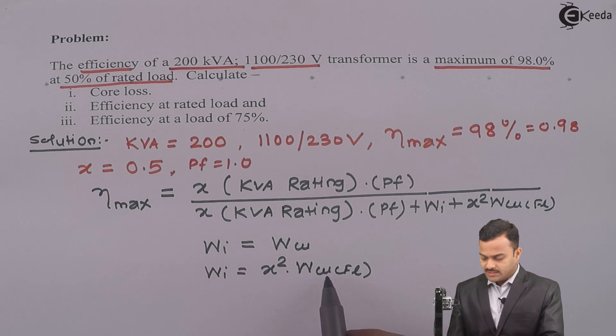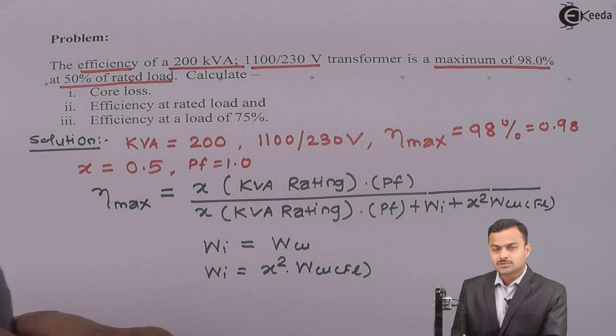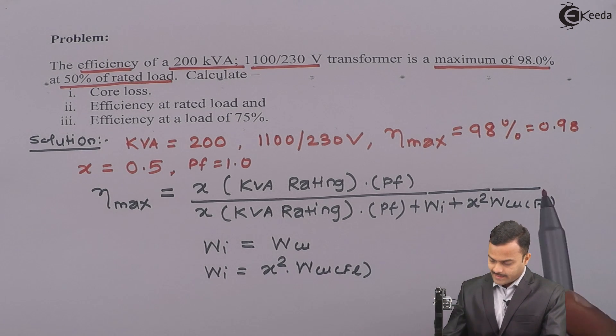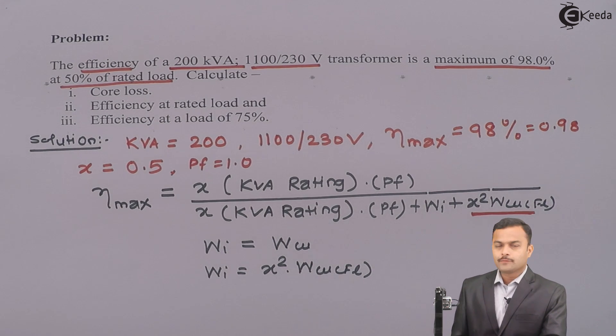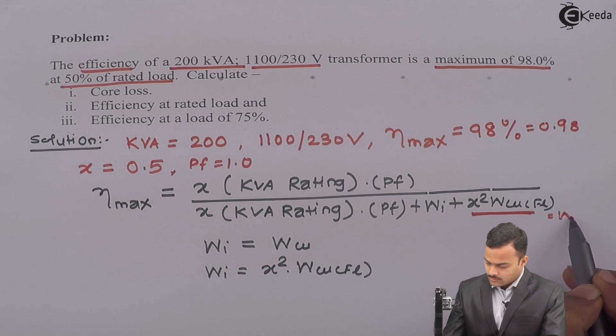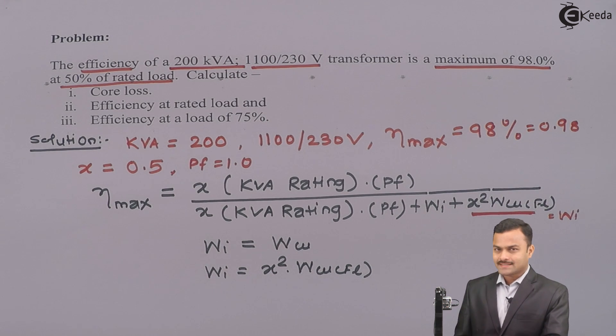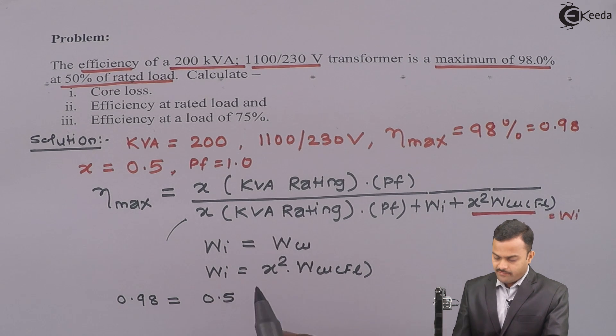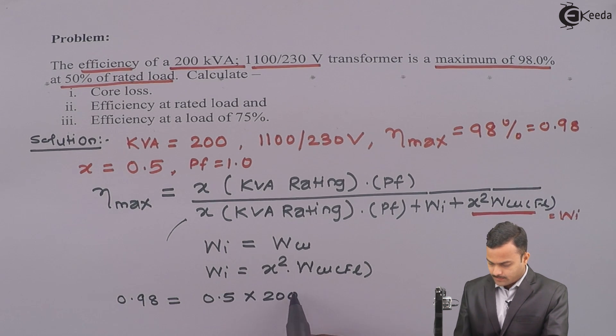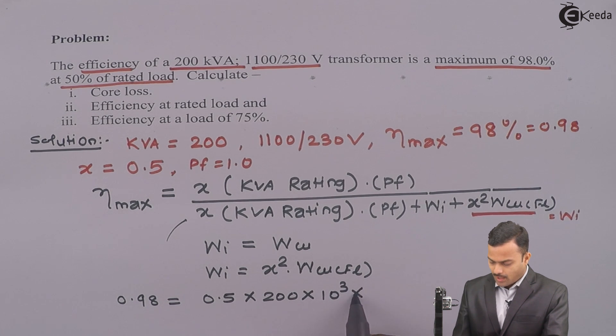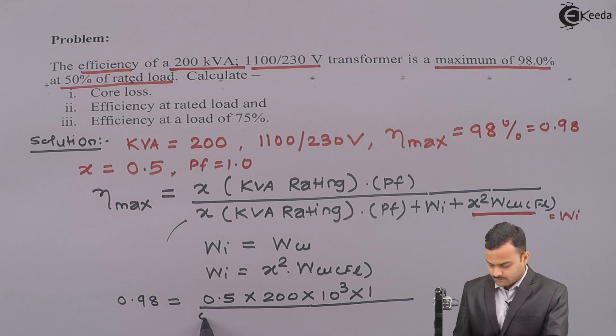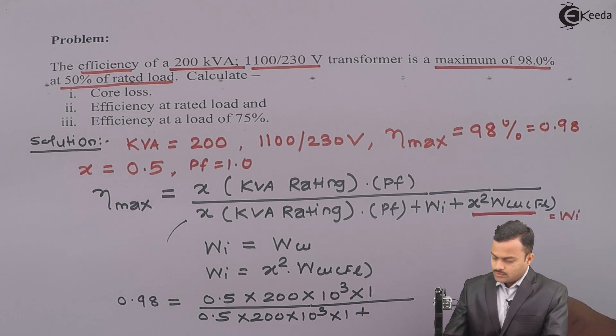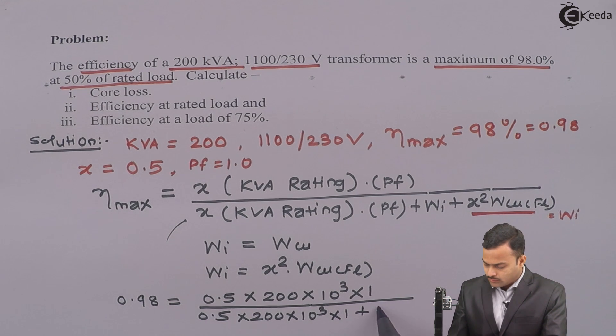How I am going to use this relationship over here? Let us substitute the values also. So instead of this X square WCUFL, I am going to write this equal to WI because efficiency is maximum the condition is WI equal to X square WCUFL. So efficiency maximum is 0.98, x is 0.5, kVA rating is 200, so it is 200 multiplied by 10 raised to 3 and power factor we assume unity.